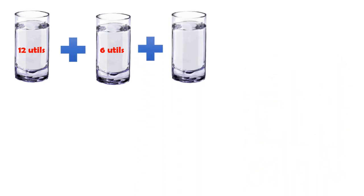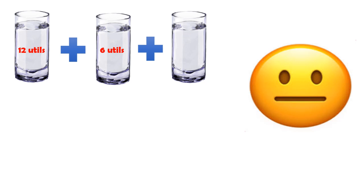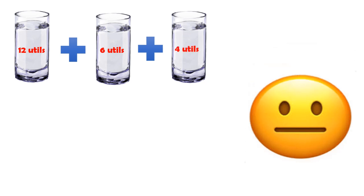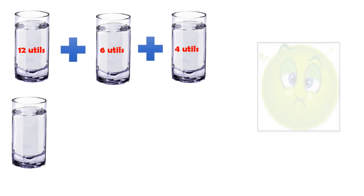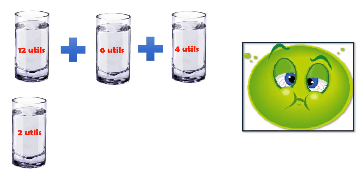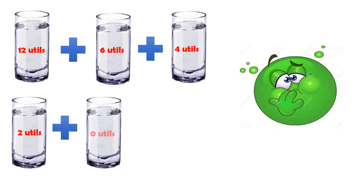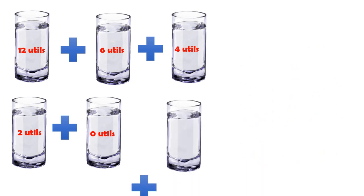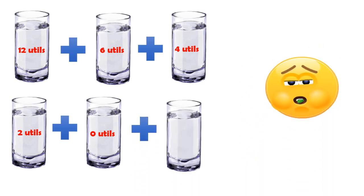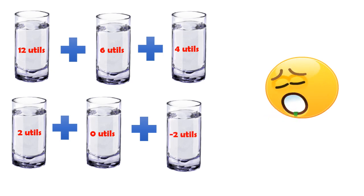His satisfaction from the third glass is further reduced and he derives 4 utils. If he continues to take more glasses of water, his marginal utility for each glass will fall to zero. Finally, when he is forced to take the sixth glass of water, he will obviously feel sick and his marginal utility from the sixth glass will become negative — say, minus 2 utils.